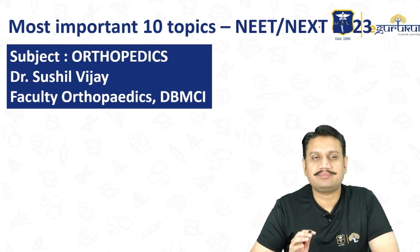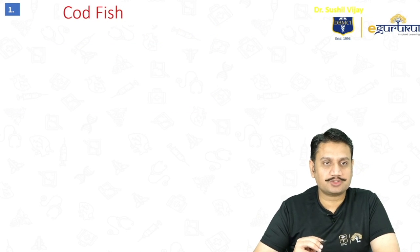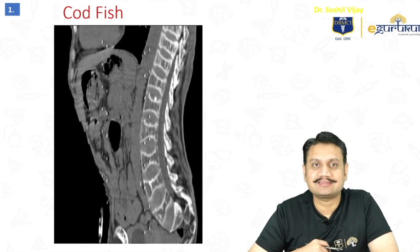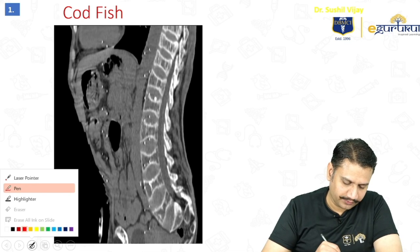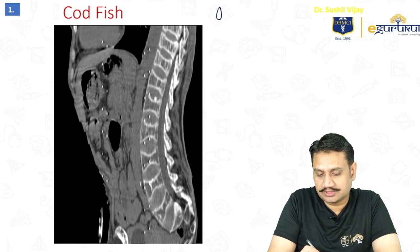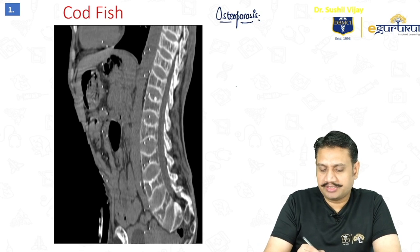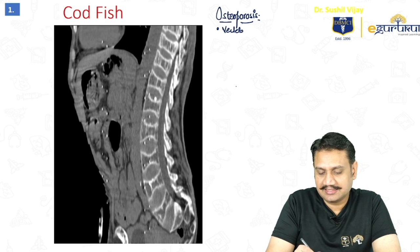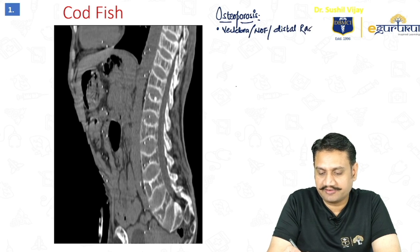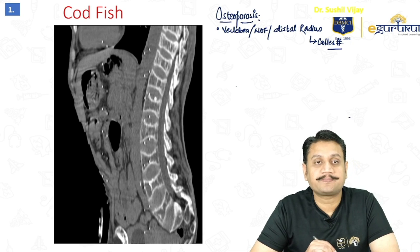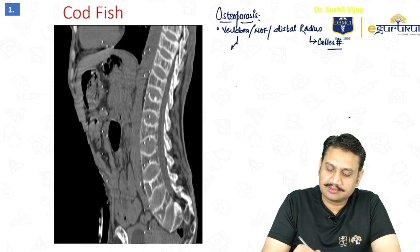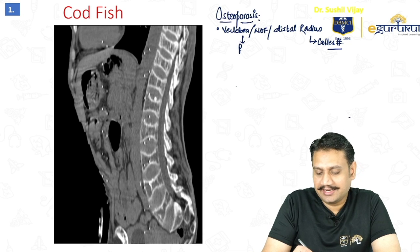Starting with the 10 most important topics. The first one is the codfish spine appearance. Along with this image, the topic I want to highlight is osteoporosis. Osteoporosis and scoliosis have been two frequently asked topics in any exam. In osteoporosis, the most commonly affected areas are the vertebra, neck of femur, and in the upper limb, the distal radius. The most common fracture associated with distal radius is Colles injury.